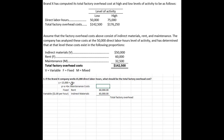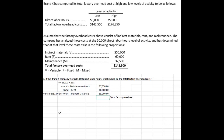For maintenance costs, now that we've created the formula for the projected mixed costs, it's easy to calculate. It's going to be $15,000 — the fixed portion — plus $0.35 per direct labor hour. I can build a formula right here in Excel: $15,000 plus $0.35 times 65,000 direct labor hours, giving an expected maintenance cost of $37,750.